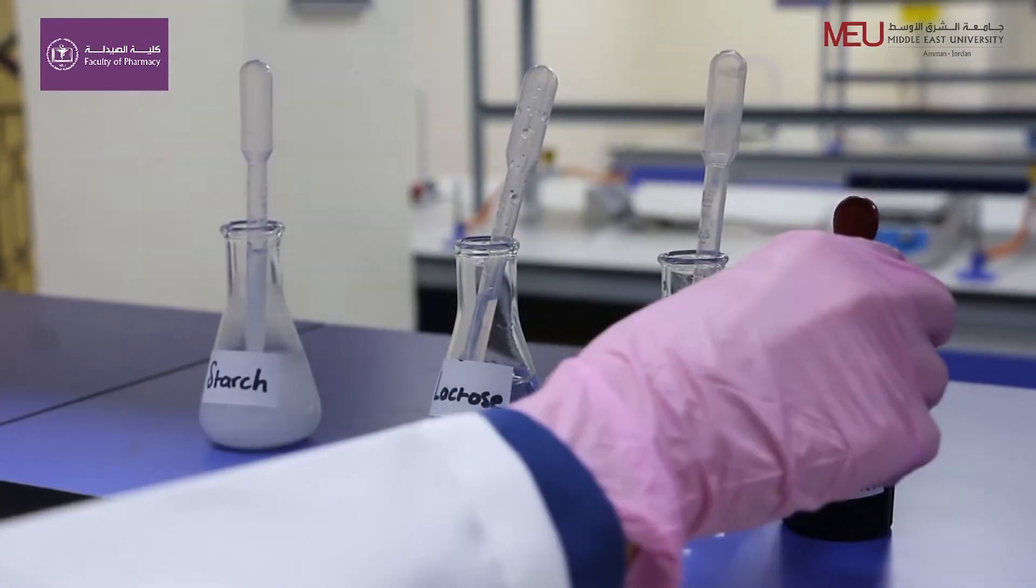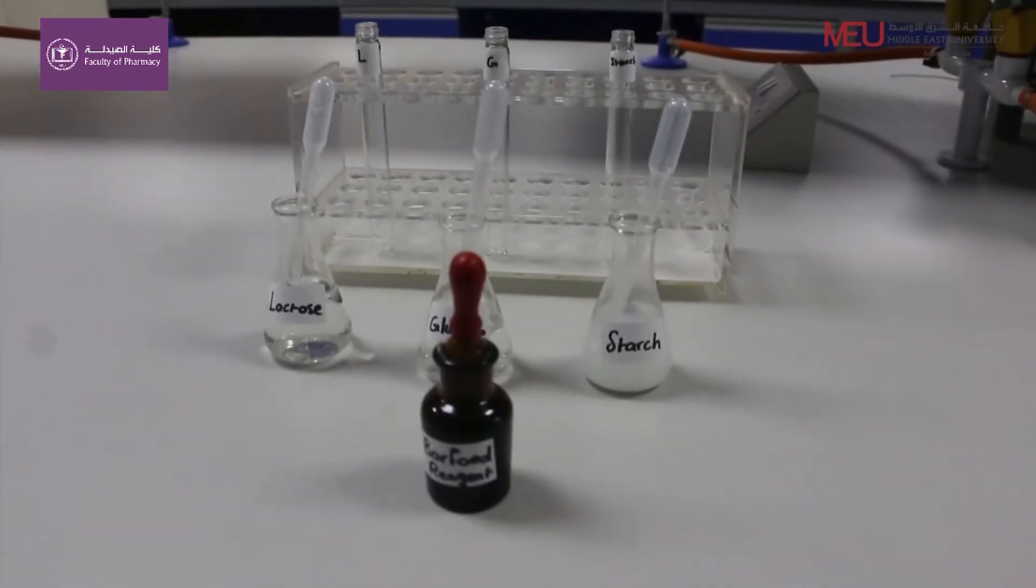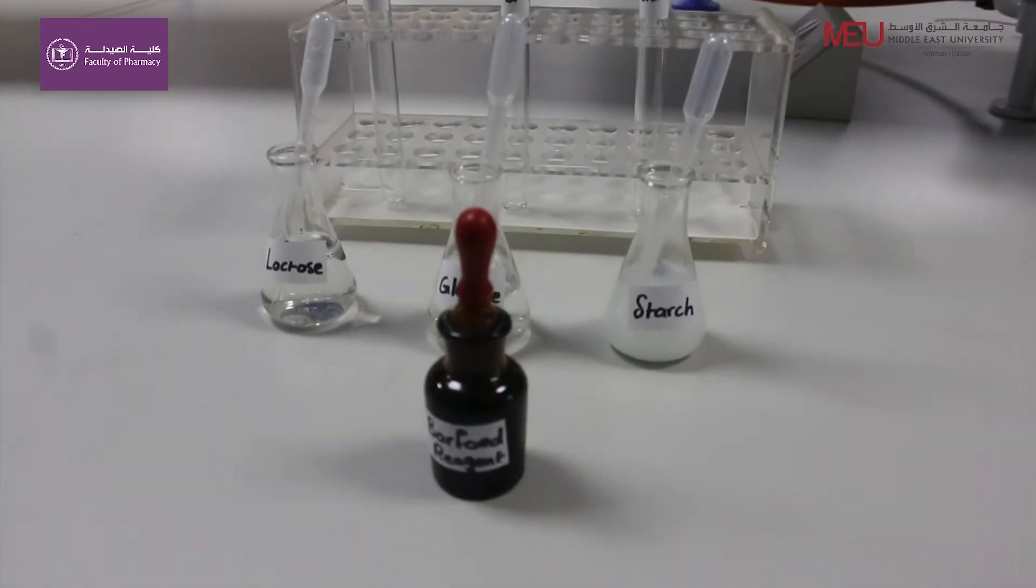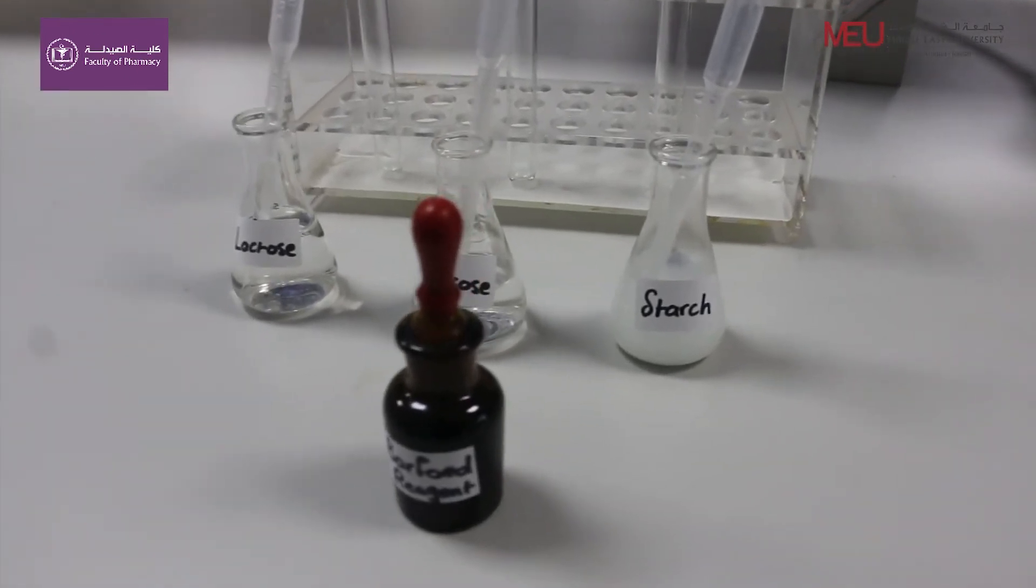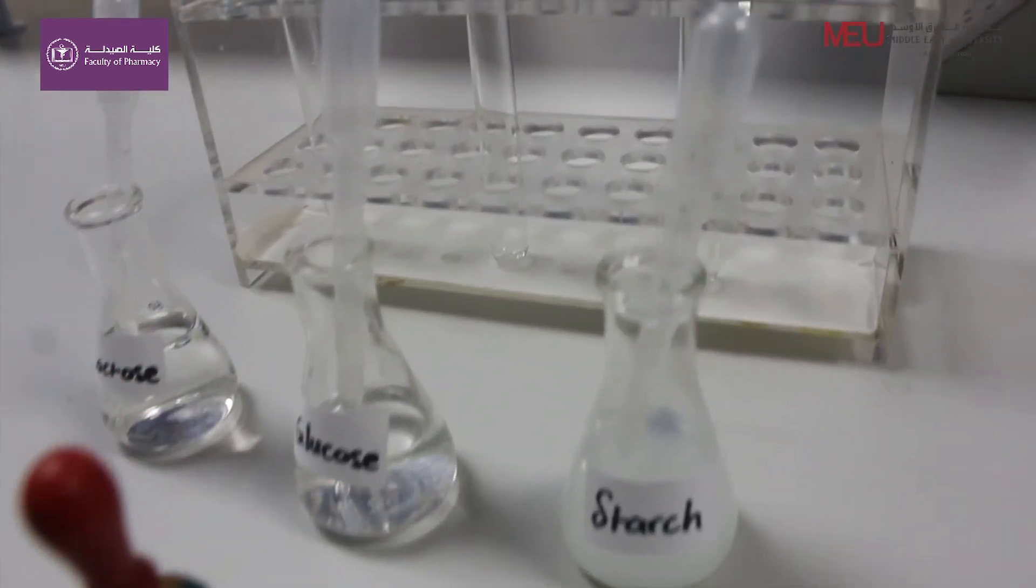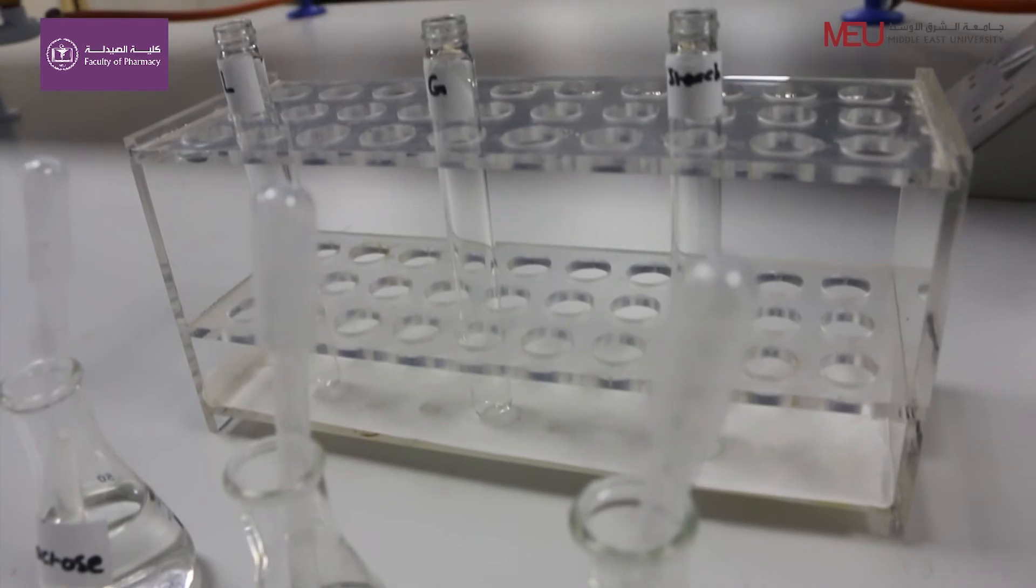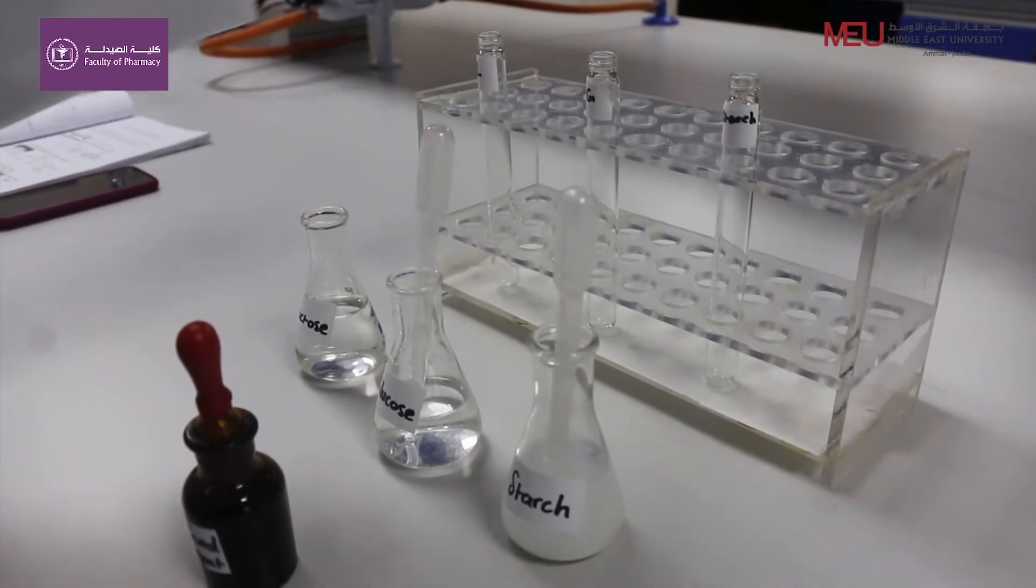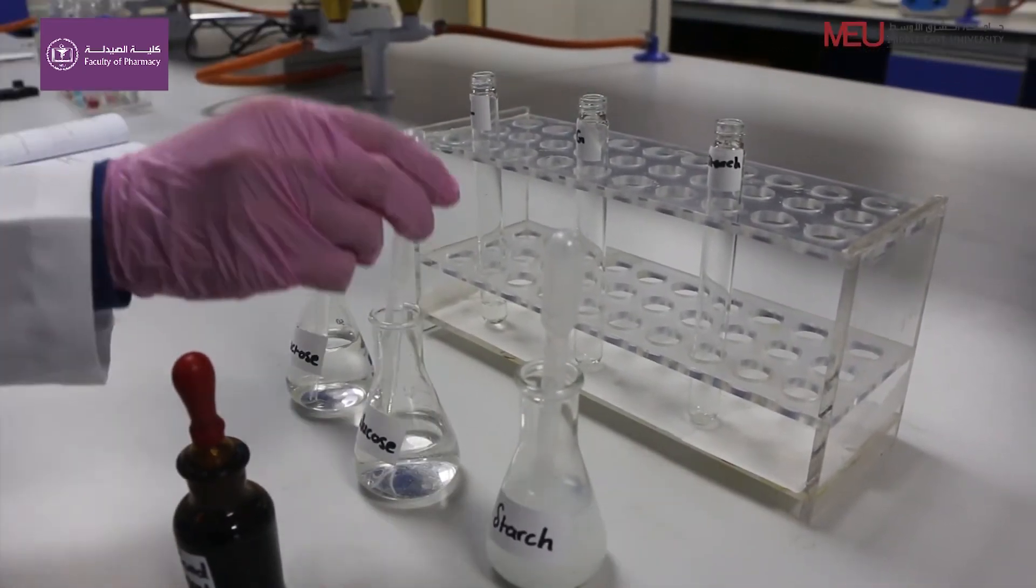Barfoed's test. Barfoed's test is used to distinguish monosaccharides from disaccharides by speed of formation of the red complex which is faster in monosaccharides. Add 3 ml of Barfoed's reagent to their separate test tubes.